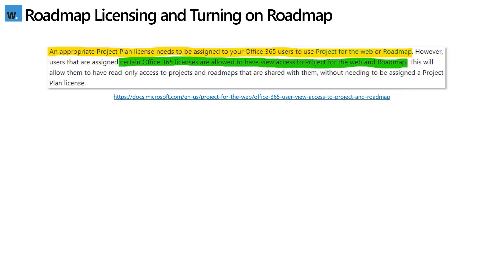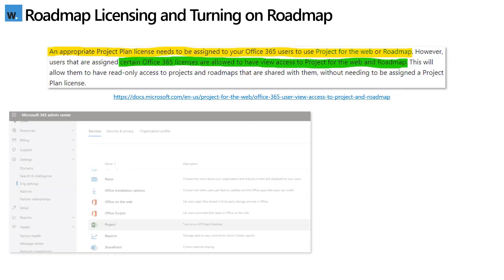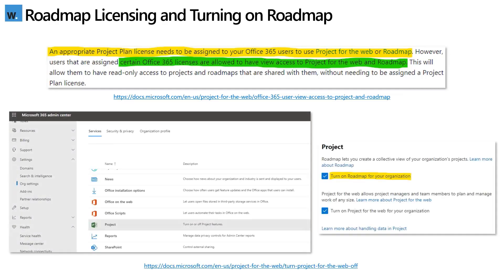If you want to check whether or not you've got access to one of those plans in place, simply follow the link displayed, and that gives you a full breakdown of all of the supported plans. I've also listed here some basic instructions on how to switch on Roadmap, along with a link to a page that provides much more detailed instructions. However, I'll quickly run through the process now and then get on with a demo.